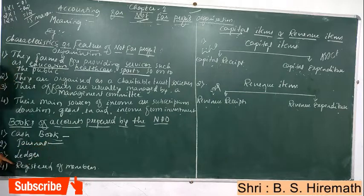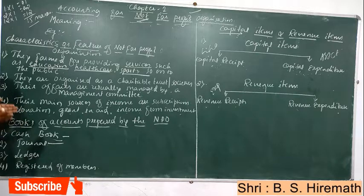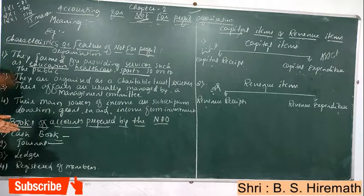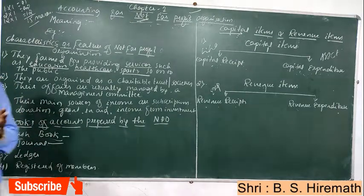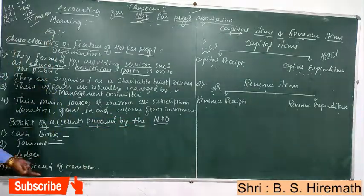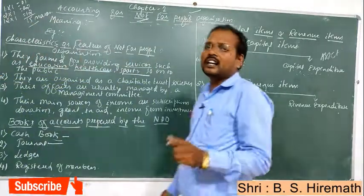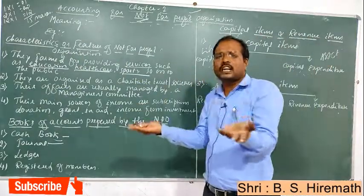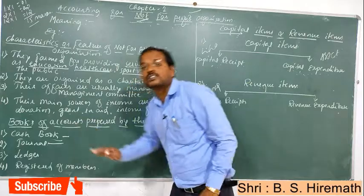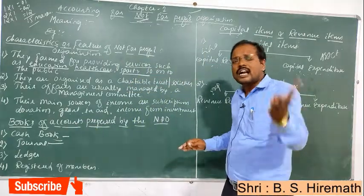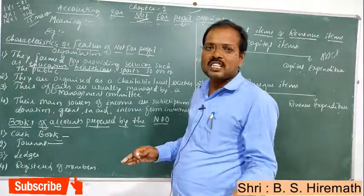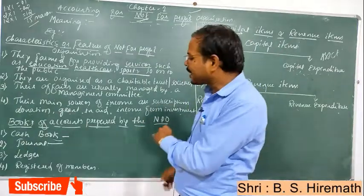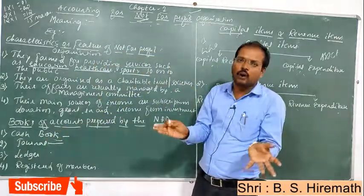Second is the journal — day-by-day operating activities of the not-for-profit organization are recorded in the journal book. Third is the ledger, which classifies accounts: assets account is separate, liability account is separate, expenses account is separate, and income account is separate — all five accounts classified separately.